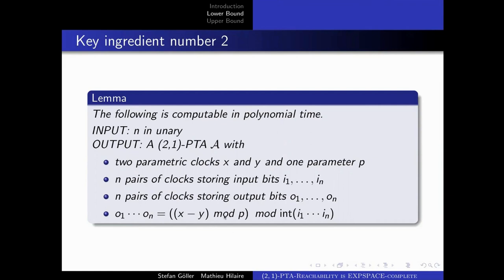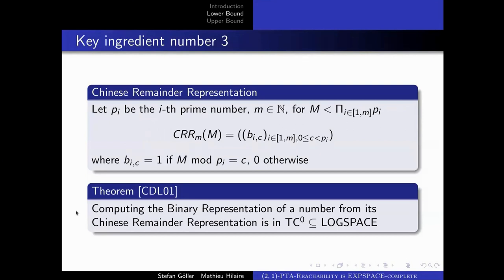We can store the entry as the difference modulo p of the two parametric clocks X and Y. Even though this is not enough to access its binary representation directly, we can access its residue modulo some number of polynomial size. We then switch from binary representation to Chinese remainder representation, where you represent the entry as a set of bits: for the first prime numbers such that the entry is strictly smaller than their product, the bits represent the residue of the entry modulo those primes. You can go from Chinese remainder representation to binary representation using logspace computations.